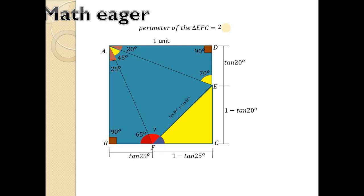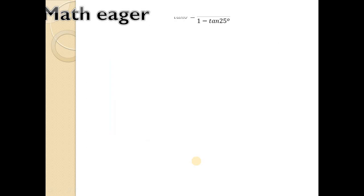Now we have to find the value of angle EFC. Let this angle EFC be theta. From triangle EFC, which is a right-angled triangle, we can use the trigonometric ratio tan theta equals P upon B, where P is 1 minus tan20° and B is 1 minus tan25°. We have to simplify this again.